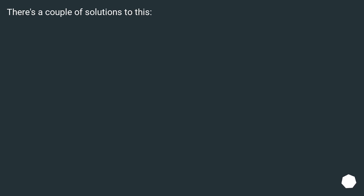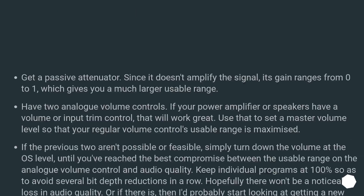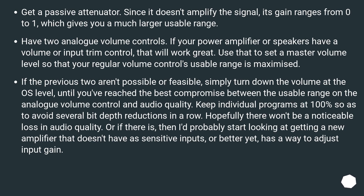There are a couple of solutions. Get a passive attenuator: since it doesn't amplify the signal, its gain ranges from 0 to 1, giving you a much larger usable range. Have two analog volume controls: if your power amplifier or speakers have a volume or input trim control, use that to set a master volume level so that your regular volume control's usable range is maximized. If those aren't possible, turn down the volume at the OS level until you've reached the best compromise between usable range and audio quality. Keep individual programs at 100% to avoid several bit depth reductions in a row.